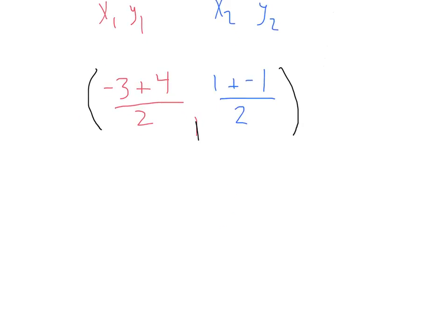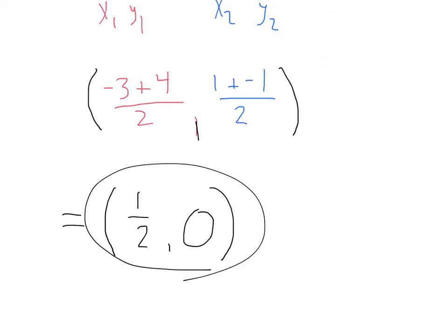Then, all we need to do is simplify. Negative 3 plus 4 will give me 1 half, and I could just leave that as a fraction. That's okay, 1 half. 1 plus negative 1 is 0, divided by 2. That's 0. And we've got our midpoint, 1 half, 0.